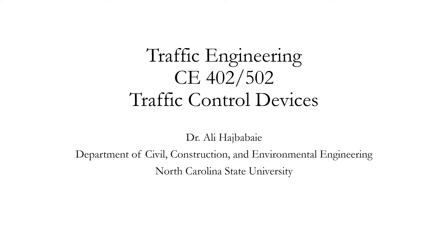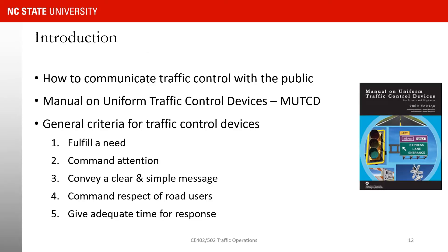Now that we are done with the course introduction, let's start talking about traffic control devices. What is the purpose of traffic control devices? The main purpose is to communicate traffic control decisions with road users — the drivers on our roads. If you want a movement to stop, you need to communicate that with the traffic. One way is to put a stop sign; another is to put a traffic light. By traffic control devices, we mean these types of devices.